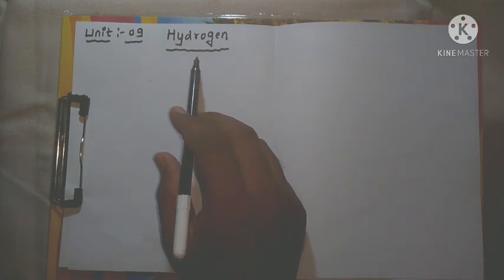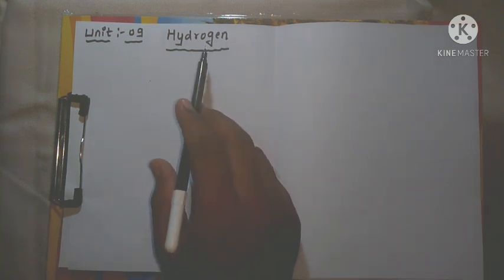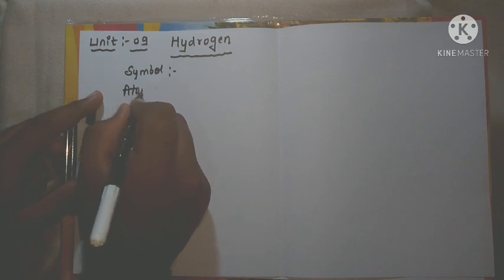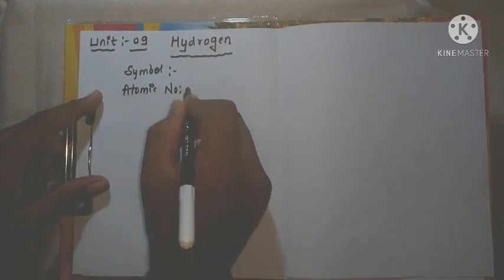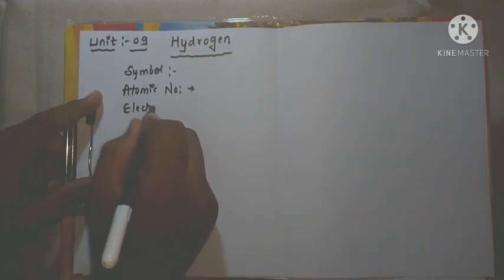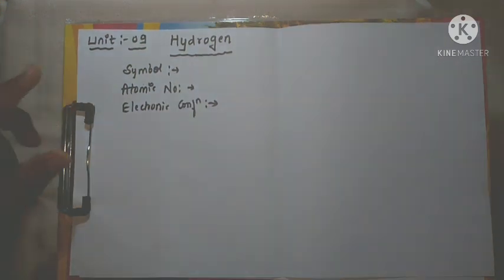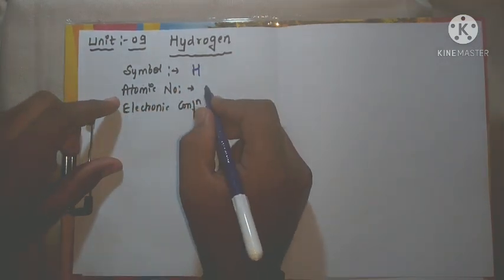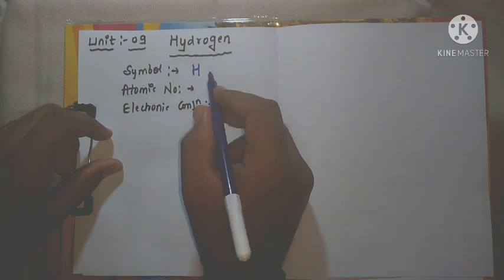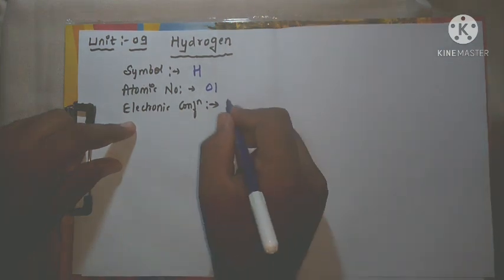Good morning students. In this class we are going to start with another unit: hydrogen. Hydrogen is one of the elements in the periodic table, and in this chapter we are going to discuss only this one element. First we will see the symbol of hydrogen, the atomic number, and the electronic configuration. The symbol is capital H, the atomic number is 1 as it is the first element in the periodic table, and the electronic configuration is 1s1.